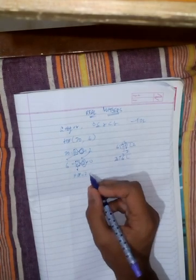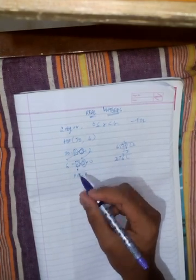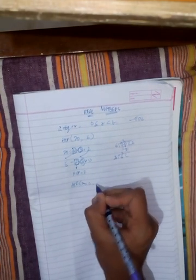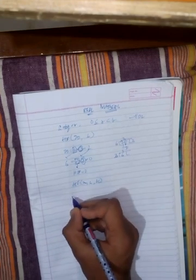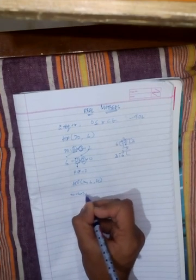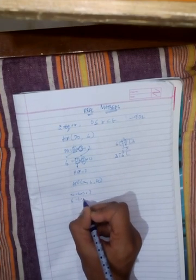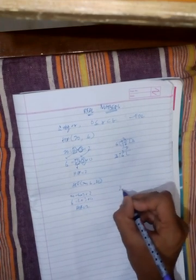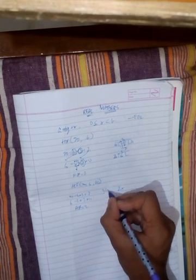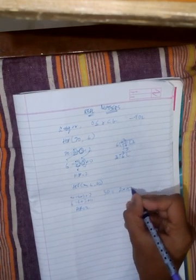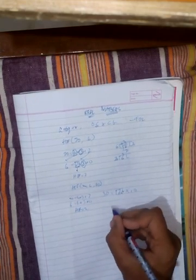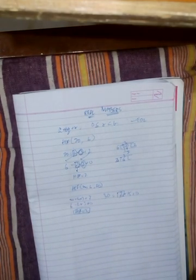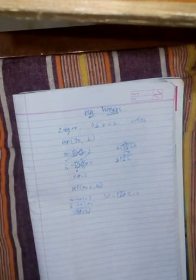Now we need to understand the fact that the HCF is simply not obtained this way. You have to do this for, for example, if you have three numbers, you have to do it for the first two, find the HCF for the first two and the third one. Like if you have HCF of 26 and let's say 30, so you take 20 this way and you get an HCF of 2. Now this 2 you have to divide by 30, and you can see 2 is the common HCF.